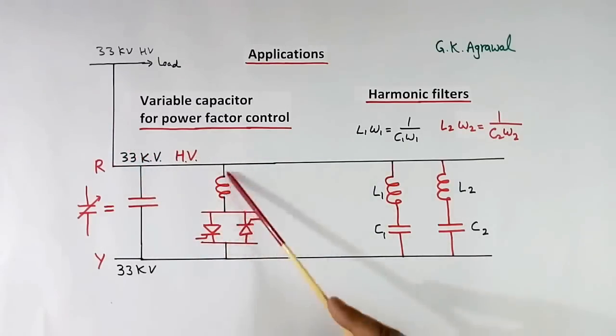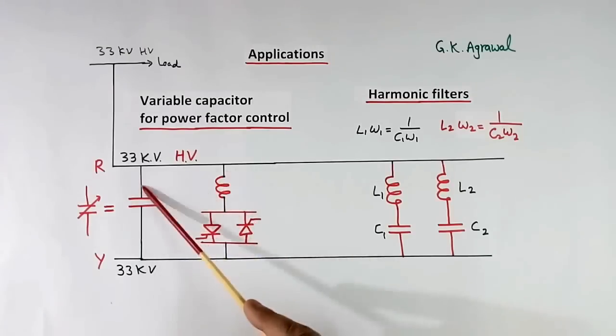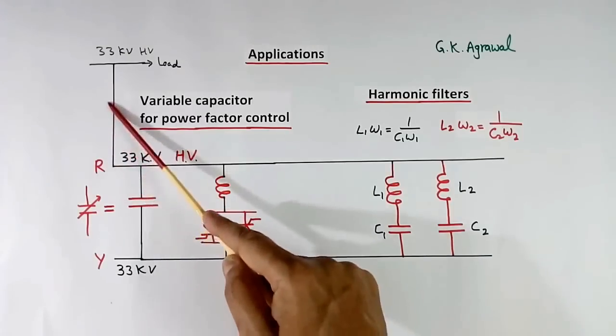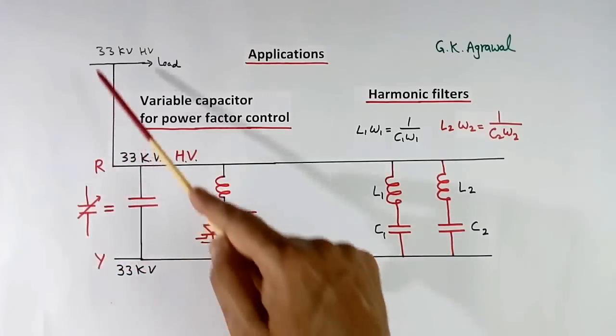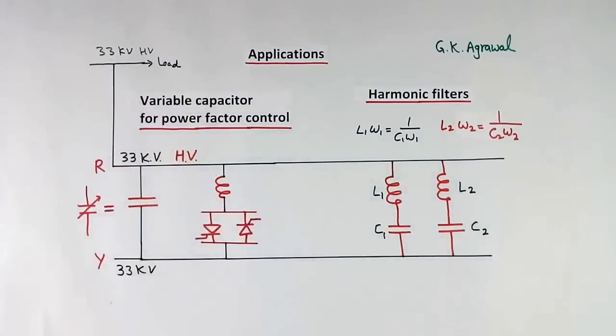As soon as current increases here, this will cancel some current here and less current will go here. So this plus this together will act like a variable capacitor, and power factor is improved here.